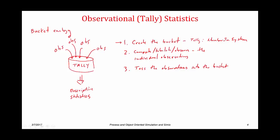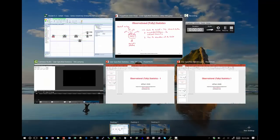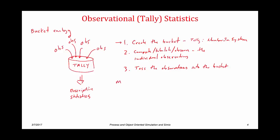That's the first step. The second step is we need to compute, tabulate, or observe the individual observations — in other words, what is it that we're interested in recording and throwing into the bucket? We're interested in time-in-system, so we want the time interval between when an entity arrives and when the entity departs. We can compute this when the entity departs. But when it gets to that departure time, we have to know when the entity arrived. So we're going to have to record a value — this is called marking the entity, which is recording the current time.